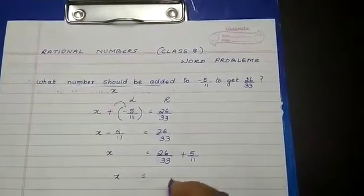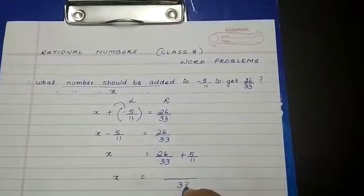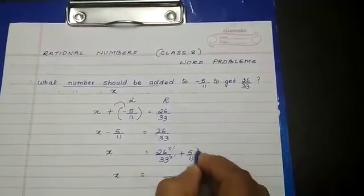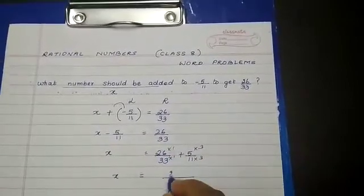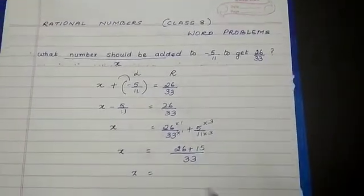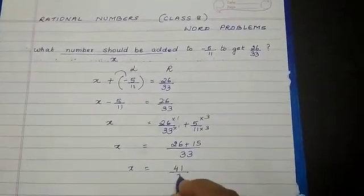What is the LCM of this 33 and 11? It is 33. 33 ones are, and 11 threes are 33. 26 ones are 26, plus 3 fives are 15. So x is equal to 41 by 33.